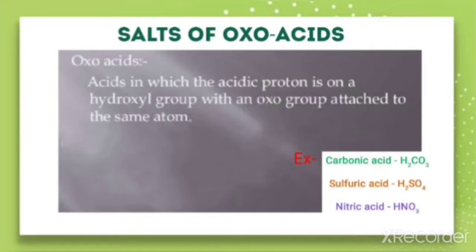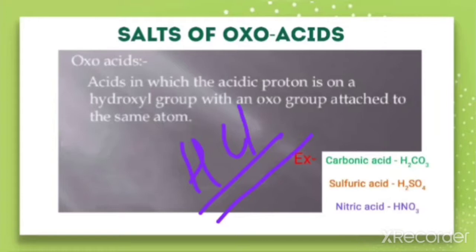So this is why these are called oxoacids. Oxoacids are acids which have the acidic proton on a hydroxyl group with an oxo group attached to the same atom. Now, is hydrochloric acid HCl an oxoacid? No, we can't call it an oxoacid because there is no hydroxyl group and there is no oxo group. So HCl is not an oxoacid — it is a mineral acid.